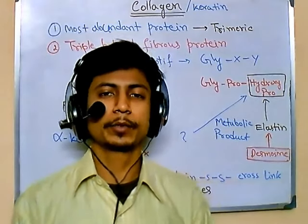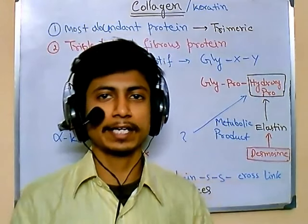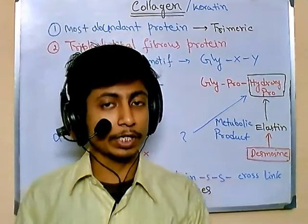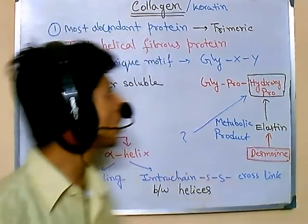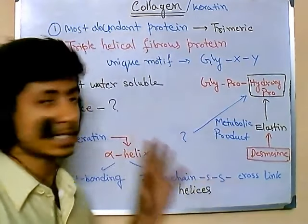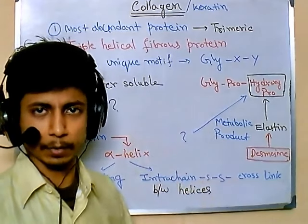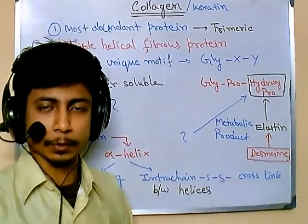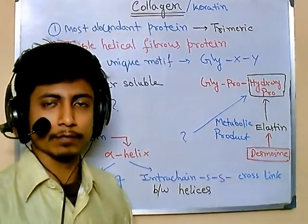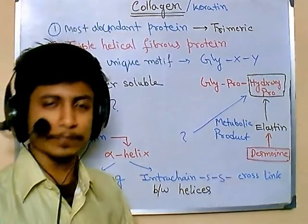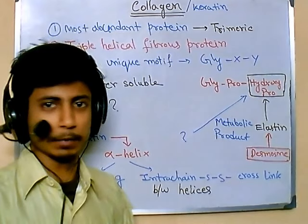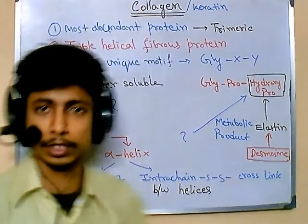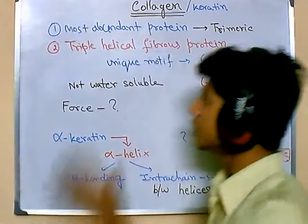Welcome back. This is CSI NET Module 1 Biochemistry, and we are talking about amino acids and proteins. This video will cover collagen and keratin — both are fibrous proteins, very important to our body. We have seen globular proteins like hemoglobin and myoglobin; now let's focus on these fibrous proteins.